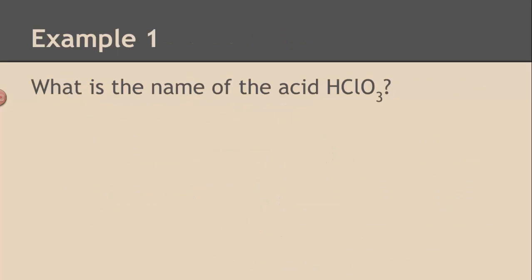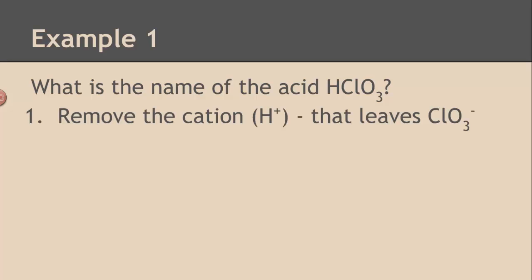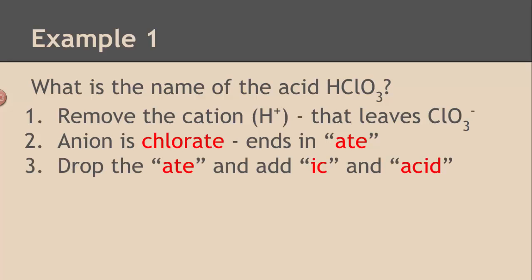Here's an example. This is the acid that we want to name HClO3. So you take away the cation, the H+. What does that leave us with? That leaves us with ClO3-. ClO3- is chlorate. That's on your sheet. It's polyatomic. Chlorate ends in -ate. Drop the -ate, put -ic, and put the word acid.